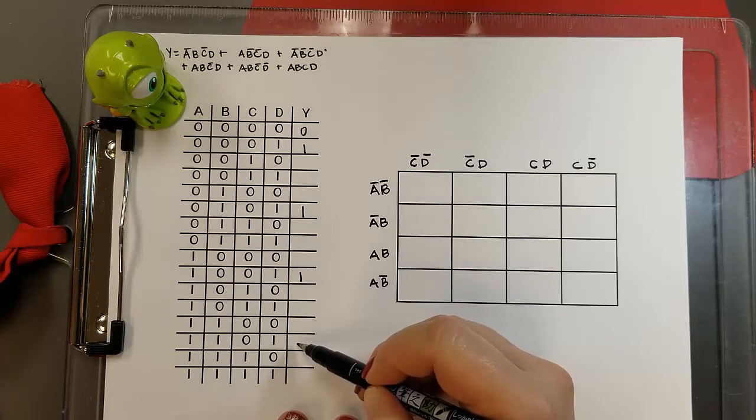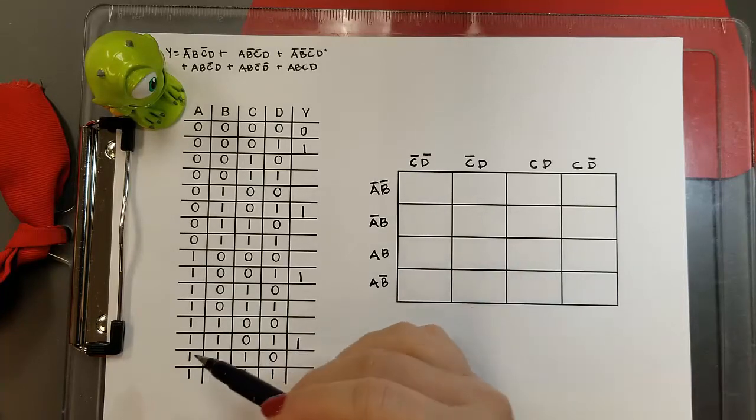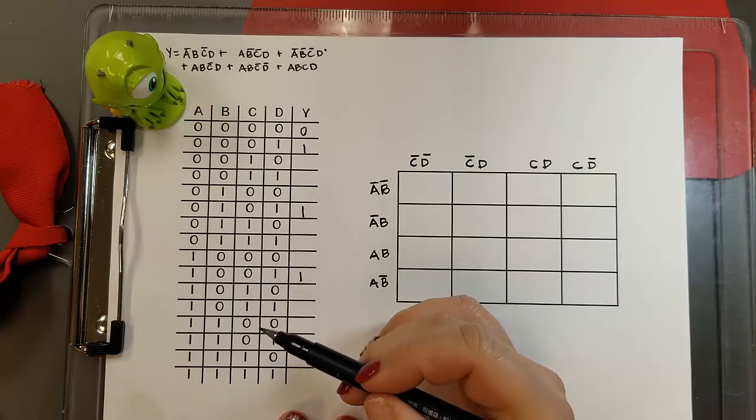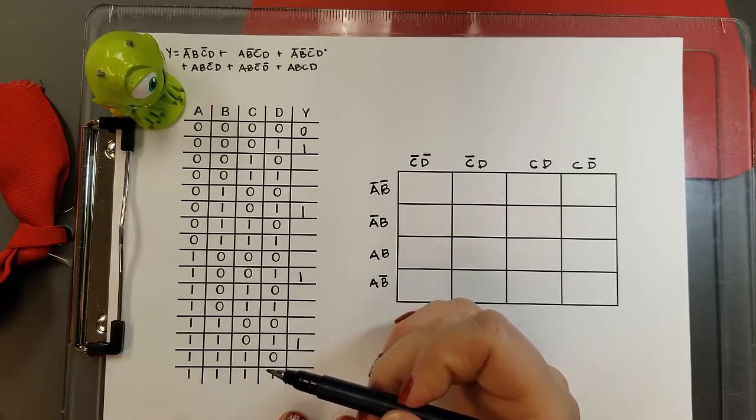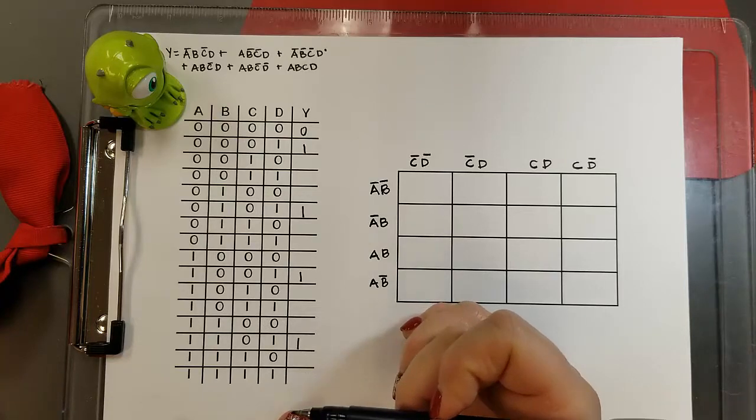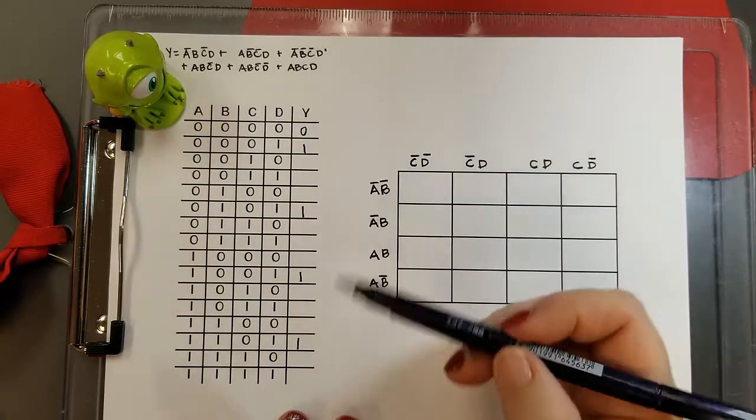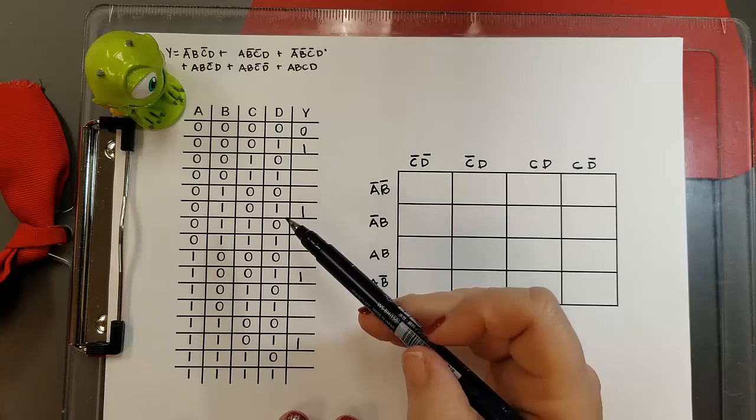And then I'll have my truth table complete. So now I'm going to mark A, B, not C, D. And now I need to mark the last two terms. So I have A, B, not C, not D.